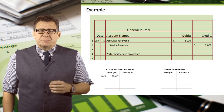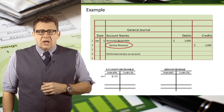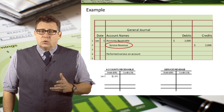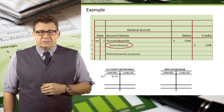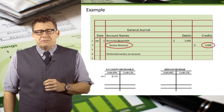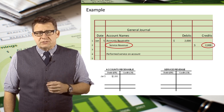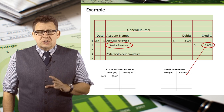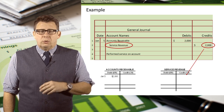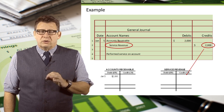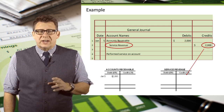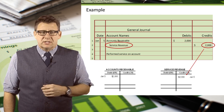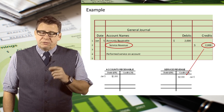Make sure to include the date or some reference to the journal transaction. Now let's post the credit. Identify the credit account, which in this case is service revenue, and the amount of the credit — $2,000. So in the ledger for service revenue, we will record or post $2,000 to the credit side like this. And don't forget the date.